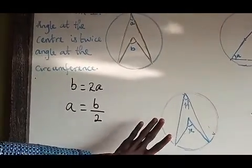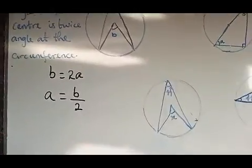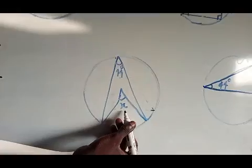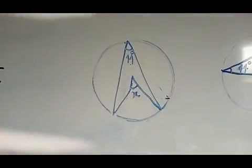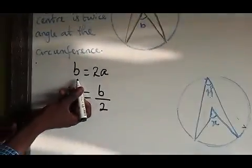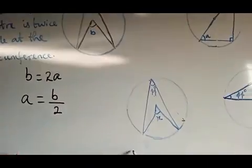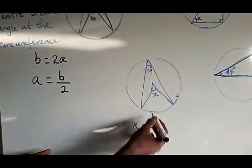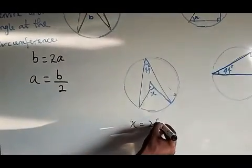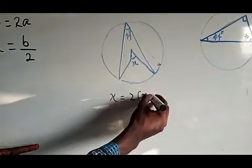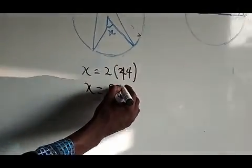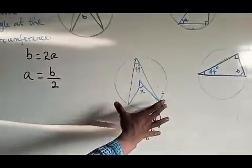Let's check with an example. The angle at the circumference is 44 degrees, and I want to find the angle at the center, X. The angle at the center X is twice the angle at the circumference, so X equals 2 multiplied by 44. Our X will be 88 degrees. So this will be the value of X.